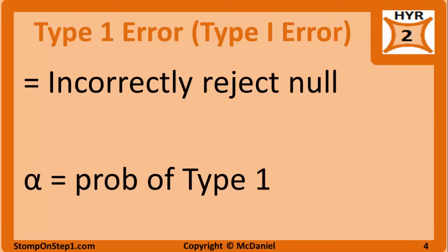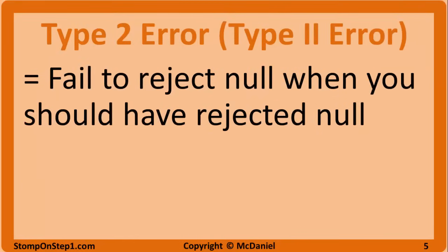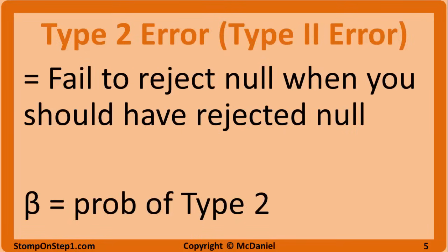Type 2 error is when you fail to reject the null when you should have rejected the null hypothesis. The researcher says there is no difference between groups when there is a real difference — it can be thought of as a false negative study result. The probability of making a type 2 error is called beta. You can remember this by thinking that beta is the second letter in the Greek alphabet.